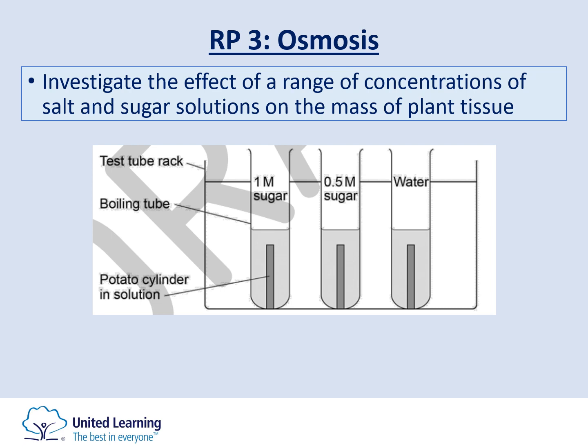In the water-only test tube, the test tube has the higher concentration of water, so the potato has a lower concentration. Water therefore leaves the test tube and enters the potato, causing it to gain mass and gain length. For the 0.5 mole sugar solution, the potato still has a higher concentration of water than the solution, so water will leave and the potato will lose mass and length — but not as drastically as in the 1 mole solution.